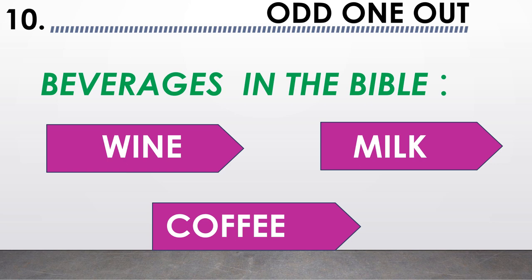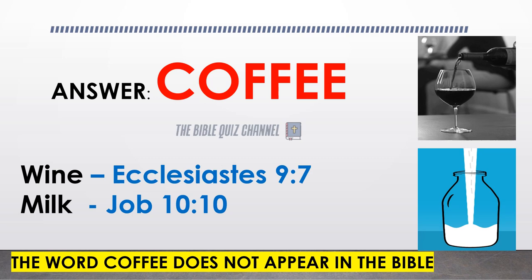Beverages in the Bible — wine, milk, and coffee. Which is the odd one out? The correct answer is coffee. The word coffee does not appear in the Bible.